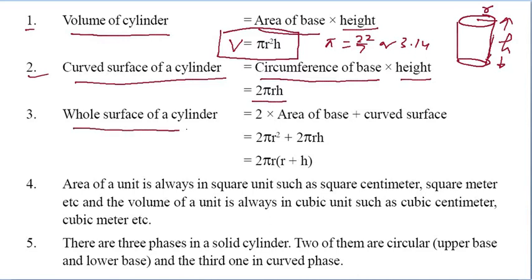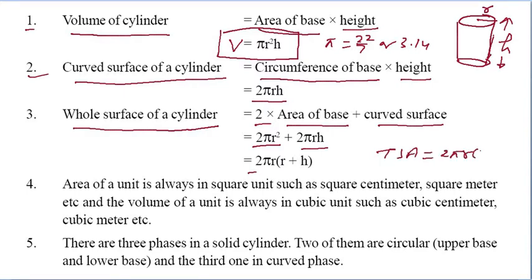Now the total surface area of the cylinder: that is 2 times area of base plus curved surface area, which gives 2 pi r square plus 2 pi r h. Taking 2 pi r common, we get Total Surface Area TSA = 2 pi r (r + h). And Curved Surface Area CSA = 2 pi r h.